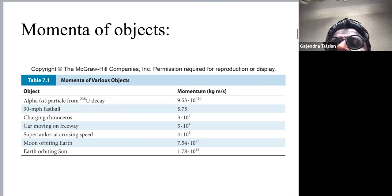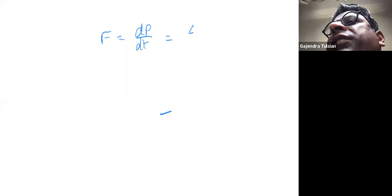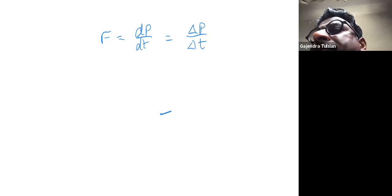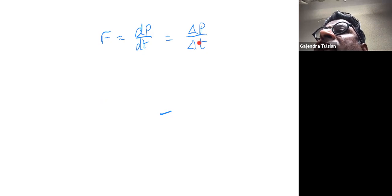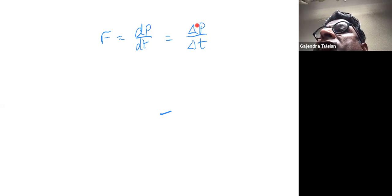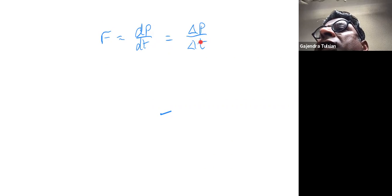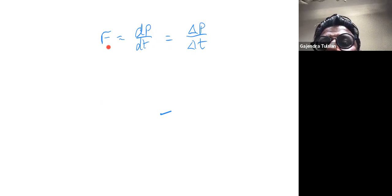Newton's second law is F = dP/dt, which is really the change in momentum divided by change in time. What this equation tells you is: if you want to change the momentum of an object and you try to change it fast, you have to apply a large force. For example, if a car is going 70 miles an hour and you want to stop it in a very short time — say a millisecond — you would have to apply a very large force.